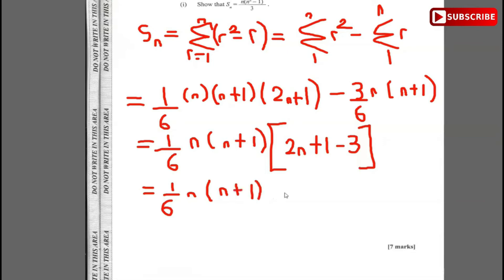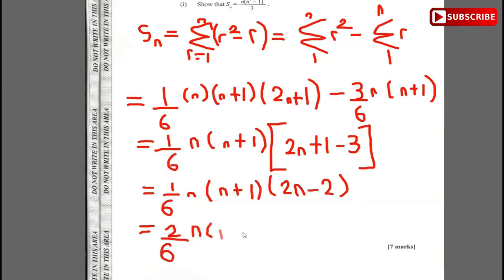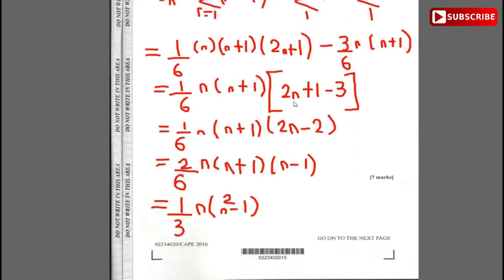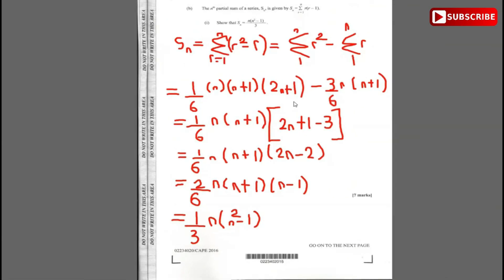This gives (1/6)n(n+1)(2n-2). Factoring out the 2 gives (2/6)n(n+1)(n-1), which simplifies to (1/3)n(n+1)(n-1). Since (n+1)(n-1) equals n²-1, we get Sn = (1/3)n(n²-1), as required.